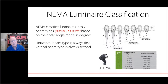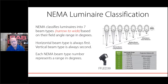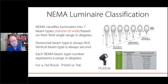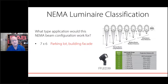A horizontal beam is always the first number, and the vertical beam is always the second number. So what you might have is something like a 7 by 6 or a 3 by 3. You might see it written as 3H by 3V, or without the H and V — either way, horizontal is always first. For example, a 7 by 6 flood, or 7H by 6V, or simply 7 by 6.